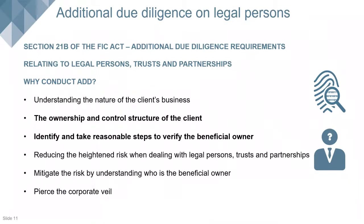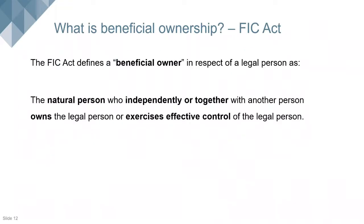The FIC Act defines the beneficial owner in respect of a legal person as the natural person who, independently or together with another person, owns or exercises effective control of the legal person. A legal person is defined in the Act as any person other than a natural person that establishes a business relationship or enters into a single transaction with an accountable institution — it includes a person incorporated as a company, close corporation, foreign company, or any other form of corporate arrangements or association.